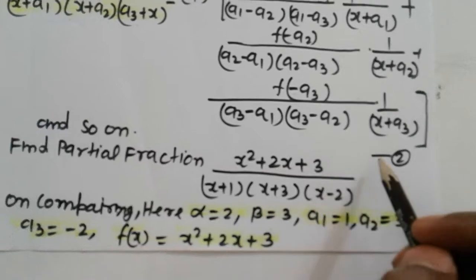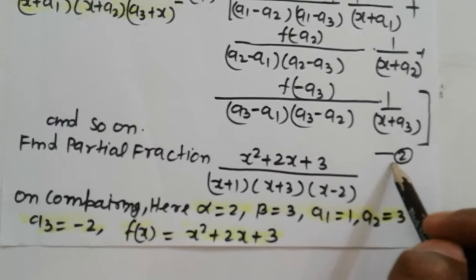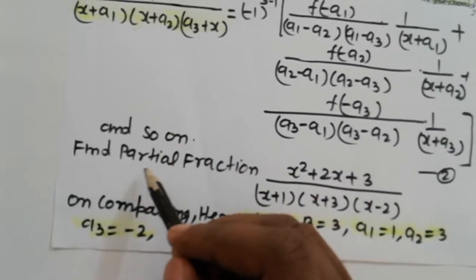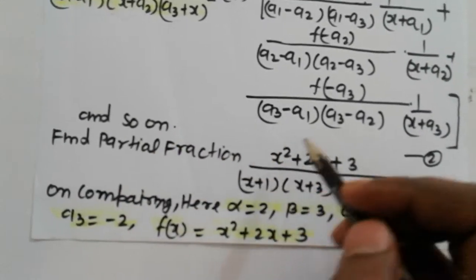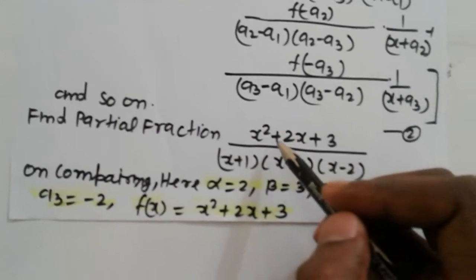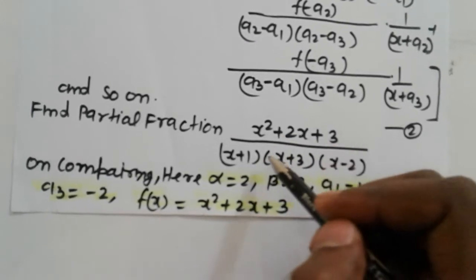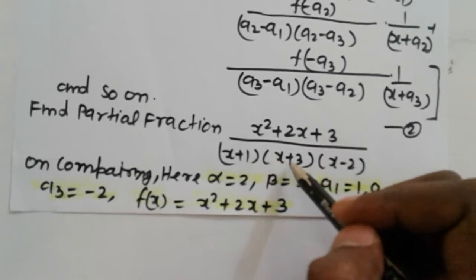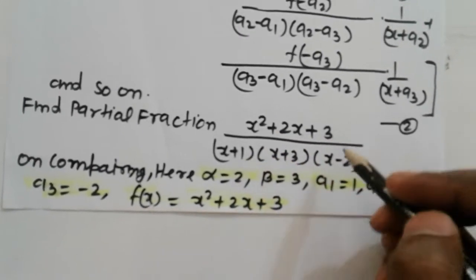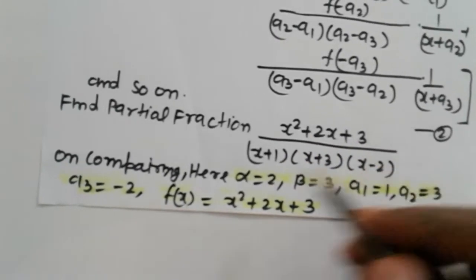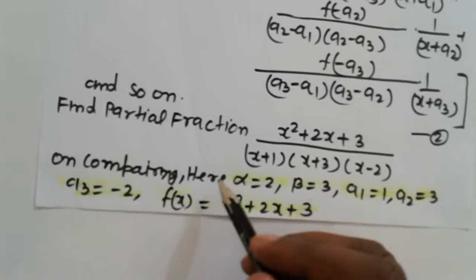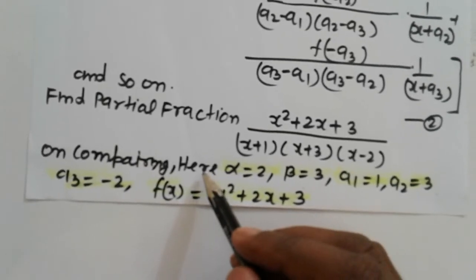Now moving to question number 2: find the partial fractions of (x squared plus 2x plus 3) divided by (x plus 1)(x plus 3)(x minus 2). On comparing, we find the values of alpha, beta, a1, a2, and a3.